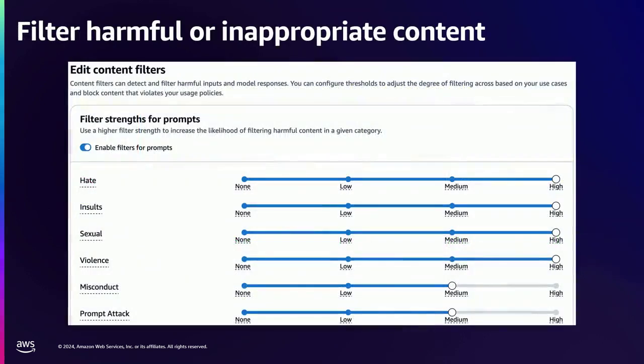To show an example of how you would filter harmful content, here is a screenshot from Bedrock's guardrails feature, which shows sliders to filter and detect harmful content of different types — for example, toxicity, hate, or even attempts to inject prompts into the request. You can reject such requests to protect your application. We recommend you look at the controls your services provide and turn those on; you have to explicitly enable these guardrails, and we highly recommend that you do.